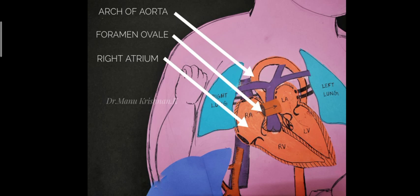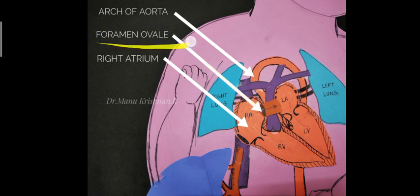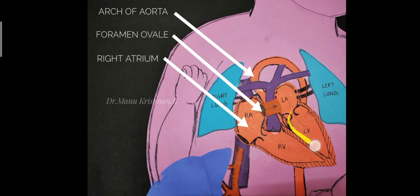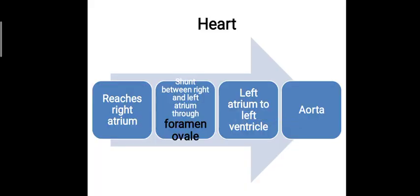The blood from the inferior vena cava reaches the right atrium of the fetal heart. Normally the right atrium pumps blood into the right ventricle, but in fetal circulation there is another bypass connecting the right atrium and the left atrium, termed the foramen ovale. Through this, blood pooled in the right atrium is pushed into the left atrium, then into the left ventricle, and from the left ventricle to the aorta as usual.